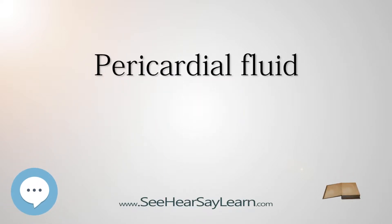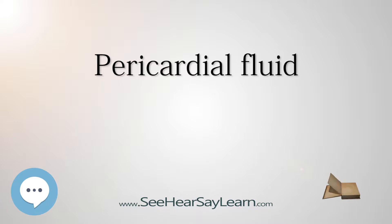Pericardial fluid is the serous fluid secreted by the serous layer of the pericardium into the pericardial cavity. The pericardium consists of two layers: an outer fibrous layer and the inner serous layer. This serous layer has two membranes which enclose the pericardial cavity into which the pericardial fluid is secreted. The fluid is similar to the cerebrospinal fluid of the brain, which also serves to cushion and allow some movement of the organ.